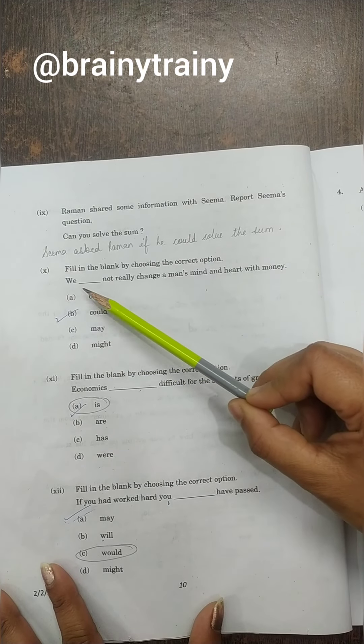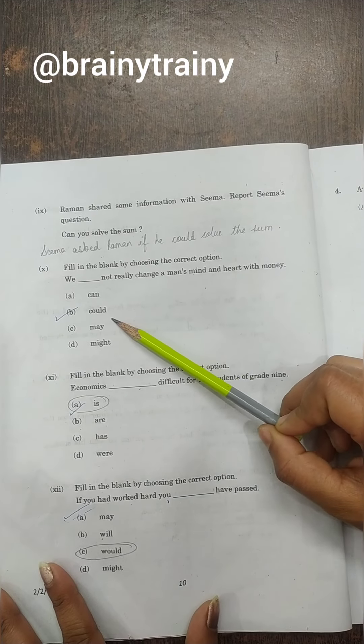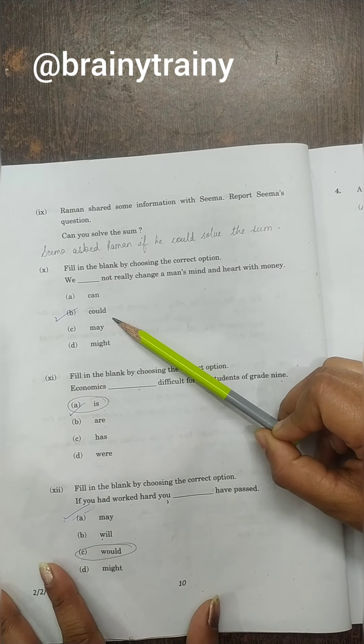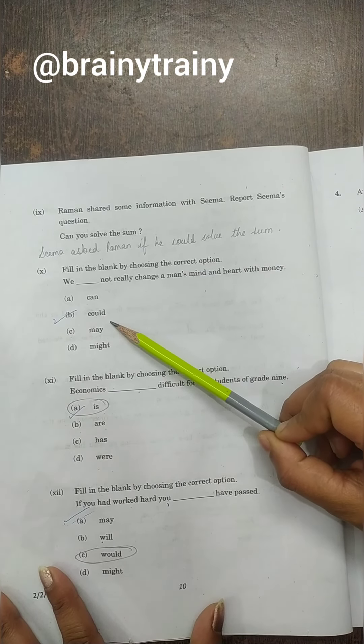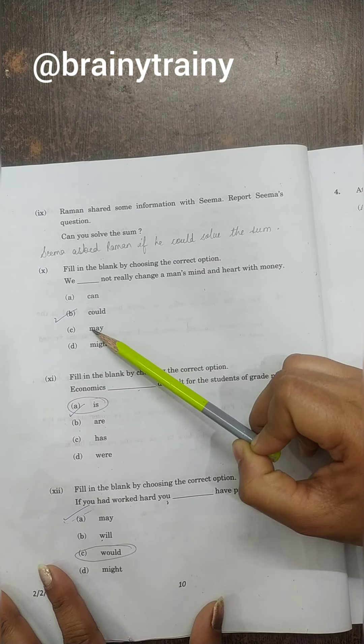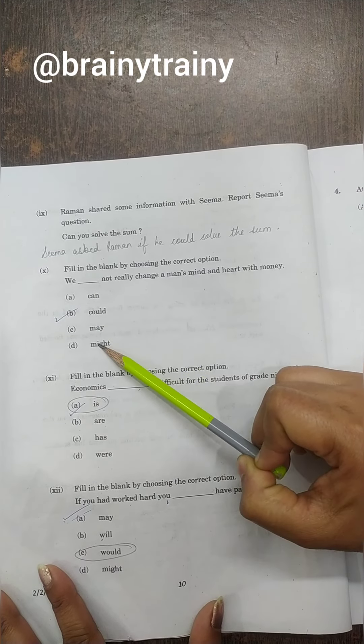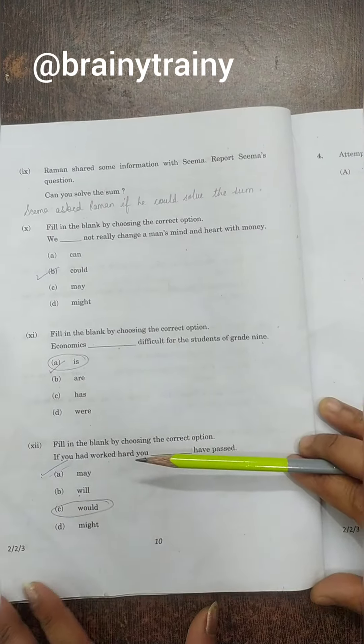Question number 10: We dash not really change a man's mind and heart with money. So I have a bit of confusion. You will tell me in the comment box what should happen, because this answer could be right. This answer can be right, but 'could' I feel is better. But you will tell me in the comment box - can or could, may might not be. Can or could.